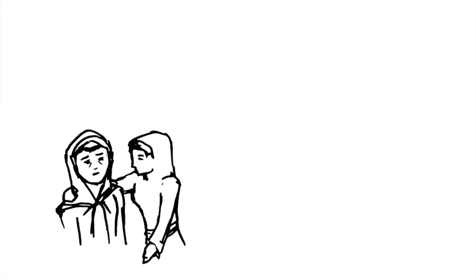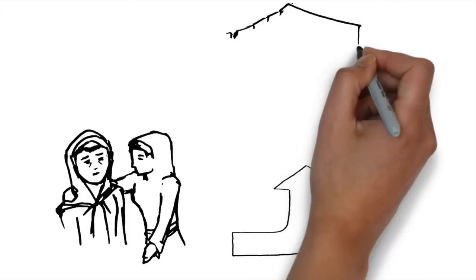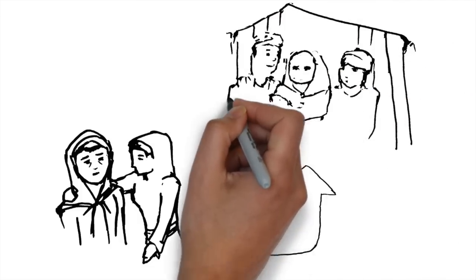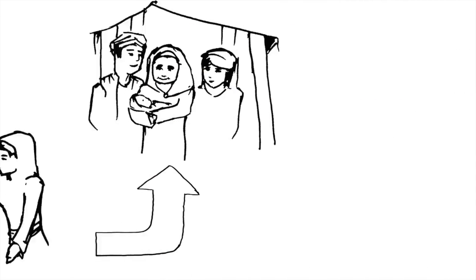Or Ruth and Naomi were destitute widows, but God used Boaz to redeem them from shame by restoring their land and giving a royal son.